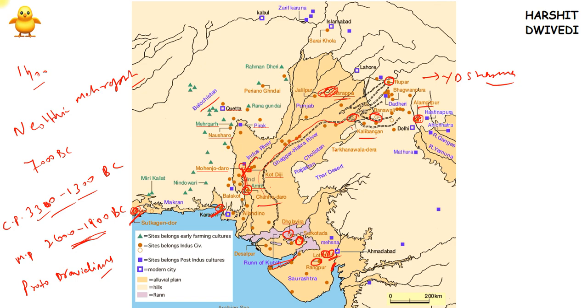These are the important sites of Indus Valley civilization. A slight idea about the map will help you remember them and on whose river banks they were located. The information given in this video about these sites is sufficient for exam purposes. In the next video, I will be talking about life at Indus Valley civilization.